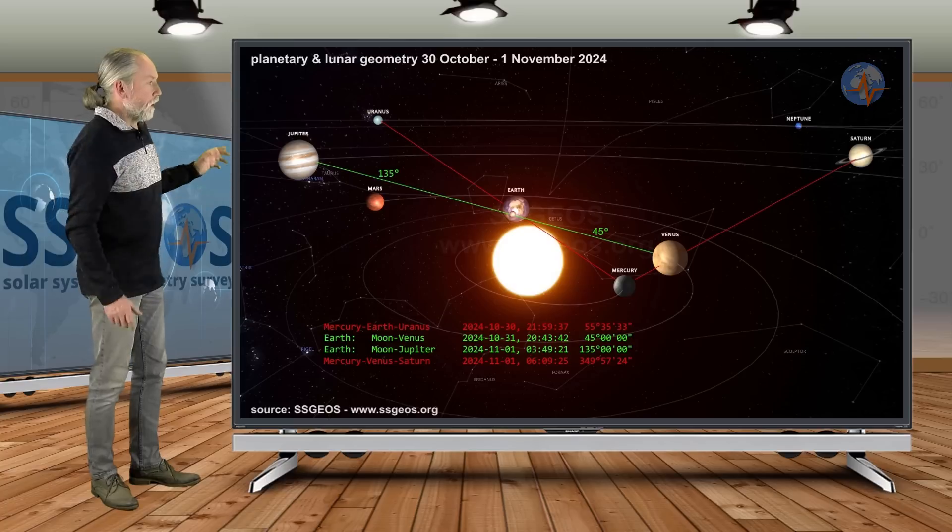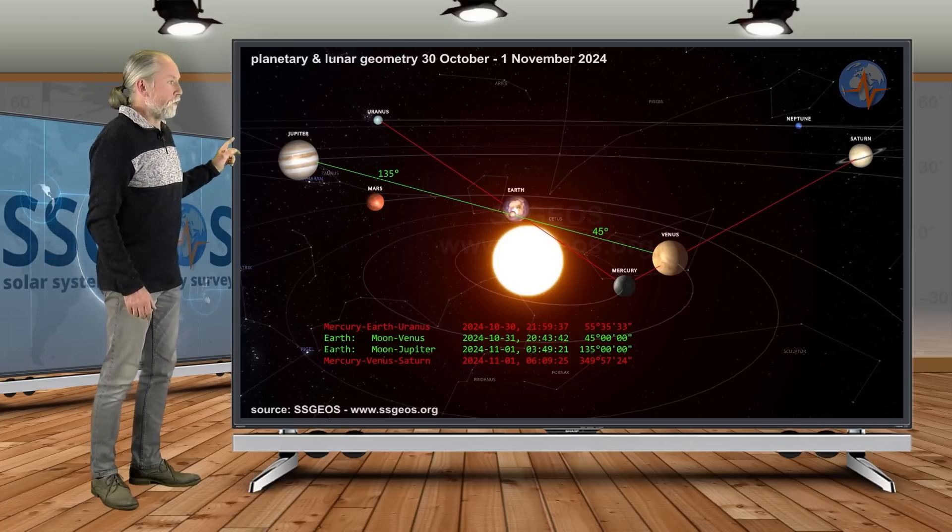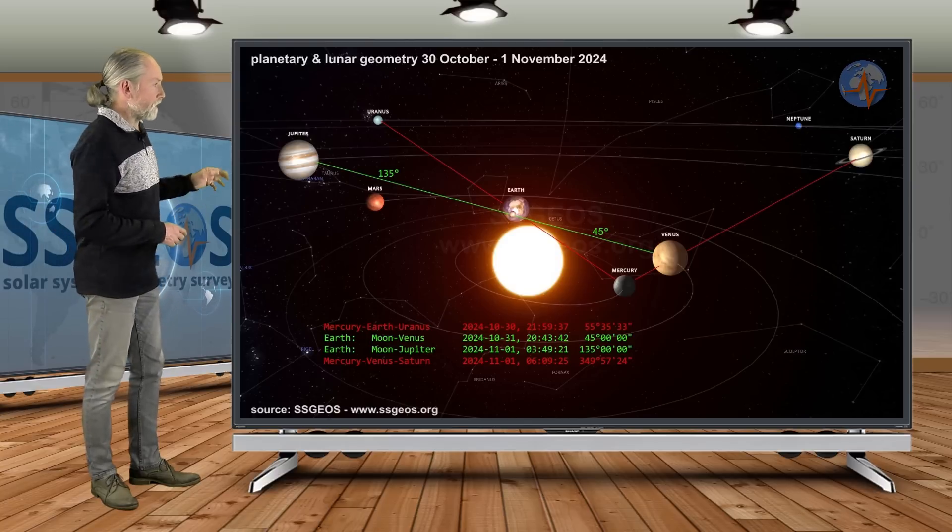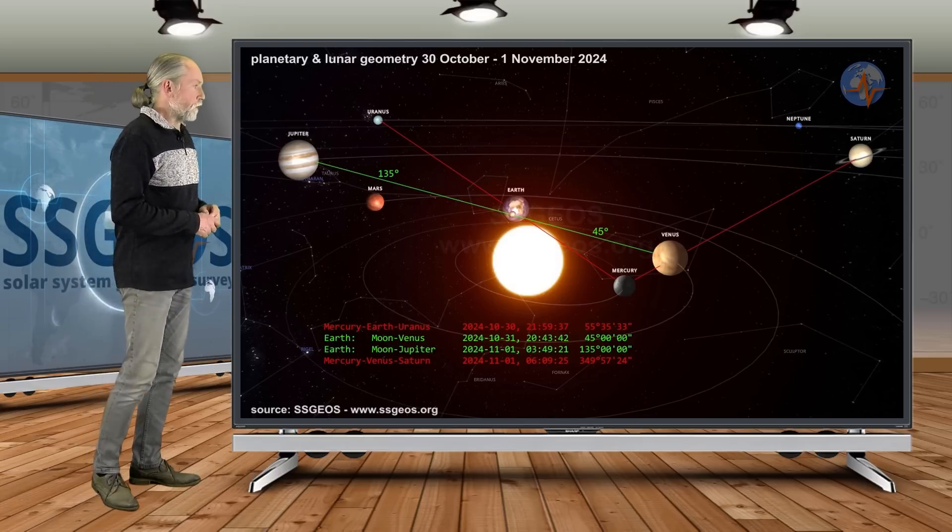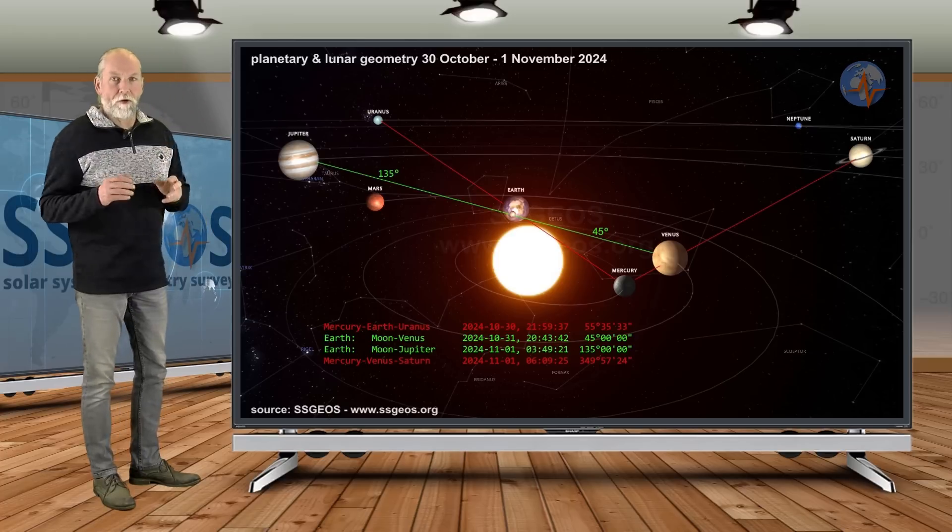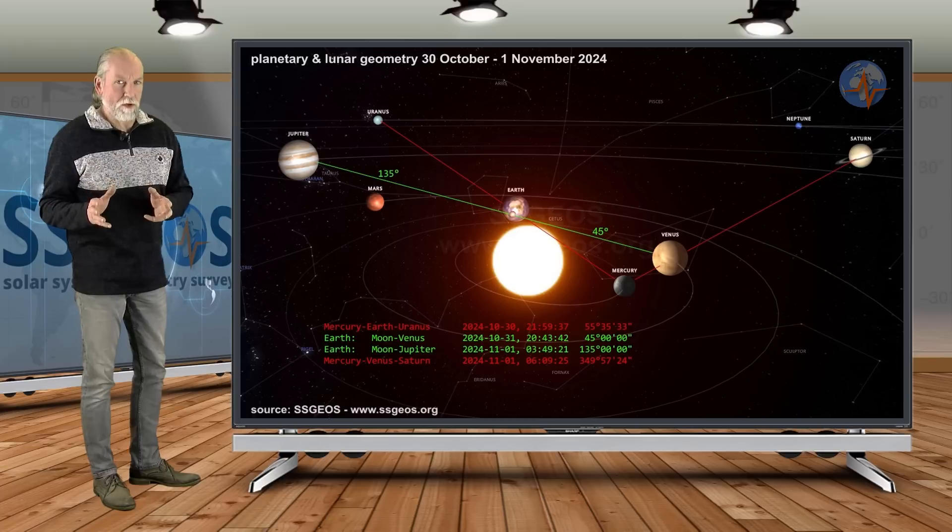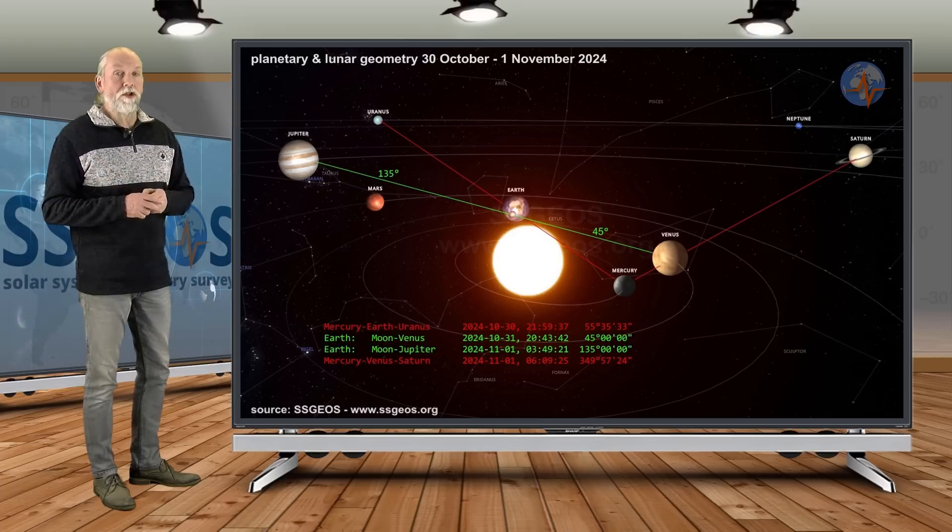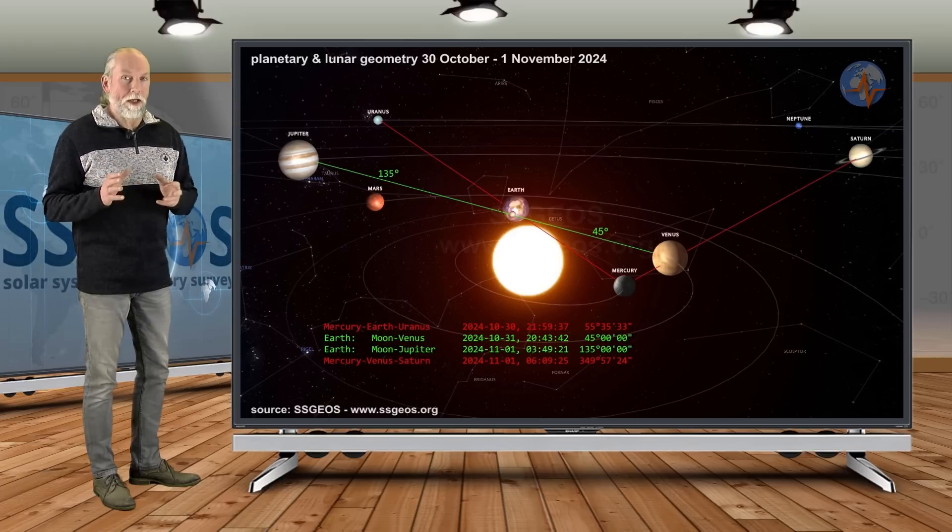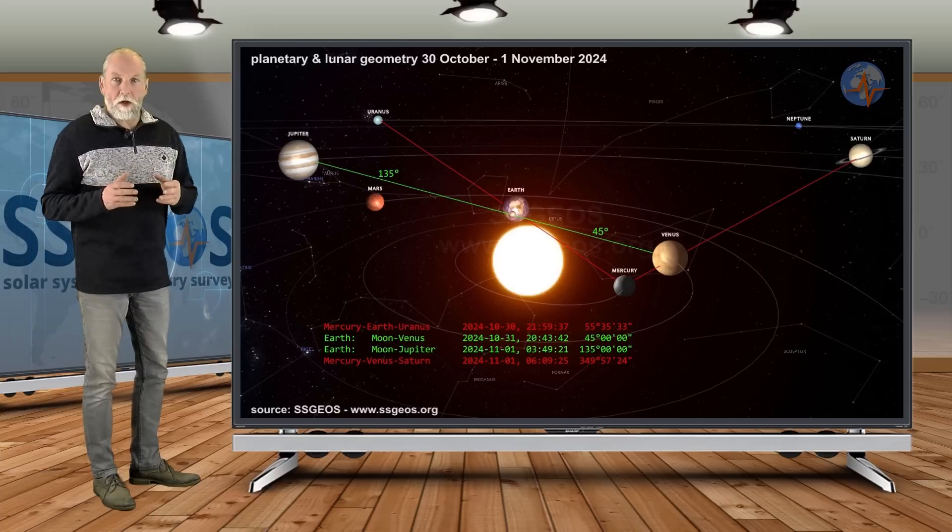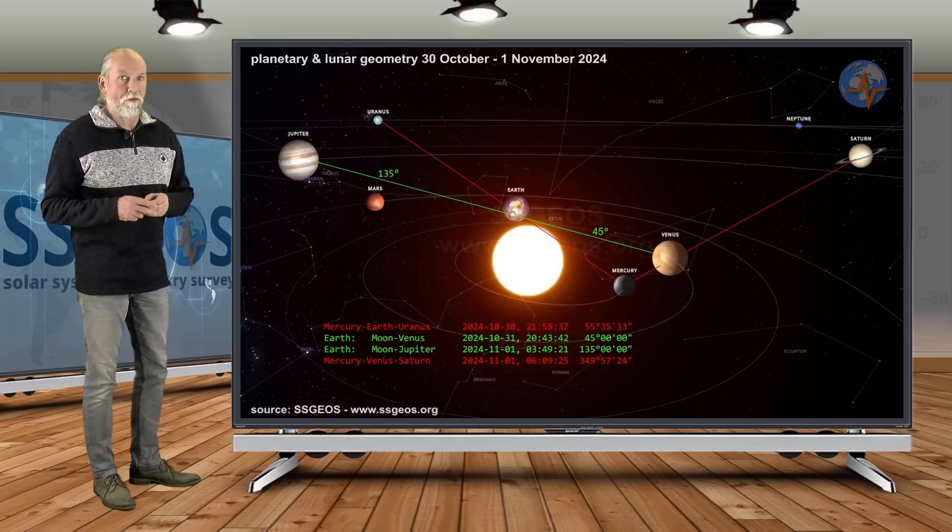More importantly we see the critical geometry involving the moon, Venus and Jupiter. 45 degrees with Venus and 135 degrees with Jupiter. That happens on the 31st of October, later on the 31st and on the 1st of November, and there are only several hours in between. As a result we could see a high of six, maybe even borderline seven magnitude earthquake within about two days. So that would be around the 3rd or 4th of November.